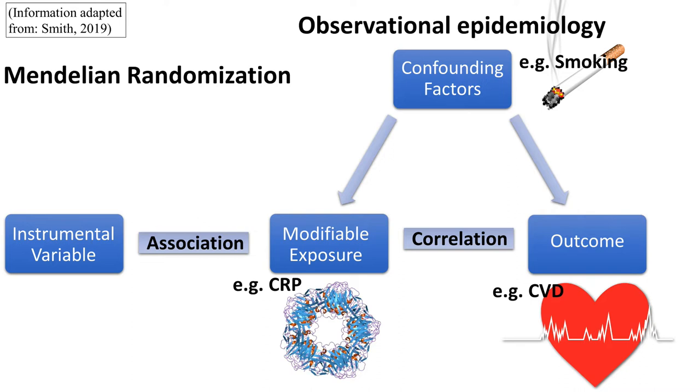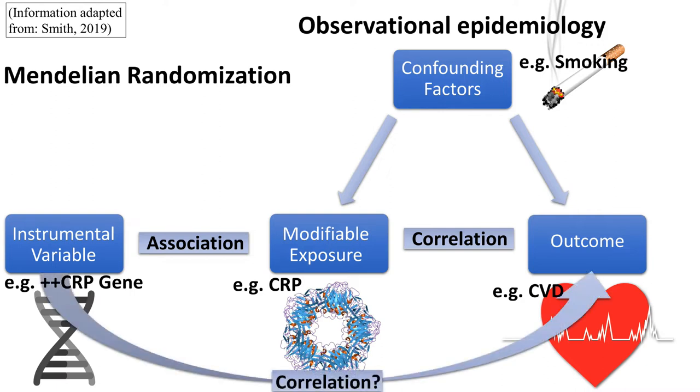Enter Mendelian randomization. This is where you find some genetic trait to act as an instrumental variable. That's basically a stand-in for the modifiable exposure. For example, say there's a gene mutation that causes people to have higher levels of C-reactive protein. You could then see if people with that genetic trait are more likely to get cardiovascular disease. This way you eliminate the problem of reverse causality since cardiovascular disease can't determine what your genes are. Your genes are randomized during conception, hence Mendelian randomization. Similarly, most confounding factors can usually be expected to be eliminated in this way because they too would be randomized throughout the population. In other words, you could expect roughly the same number of smokers, for example, to have the gene as not have the gene. So basically, Mendelian randomization is a pretty neat tool that helps researchers avoid many of the pitfalls of traditional epidemiology.